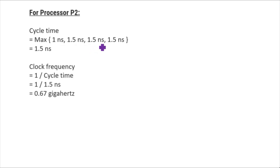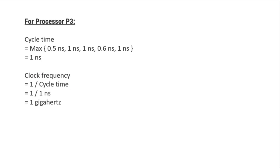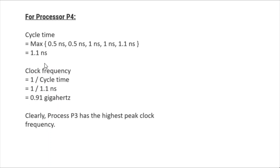For processor P2, cycle time = max(1, 1.5, 1.5, 1.5) = 1.5 nanoseconds. Clock frequency = 1 / 1.5 ns = 0.67 GHz. For processor P3, cycle time = max(0.5, 1, 1, 0.6, 1) = 1 nanosecond. Clock frequency = 1 / 1 ns = 1 GHz.